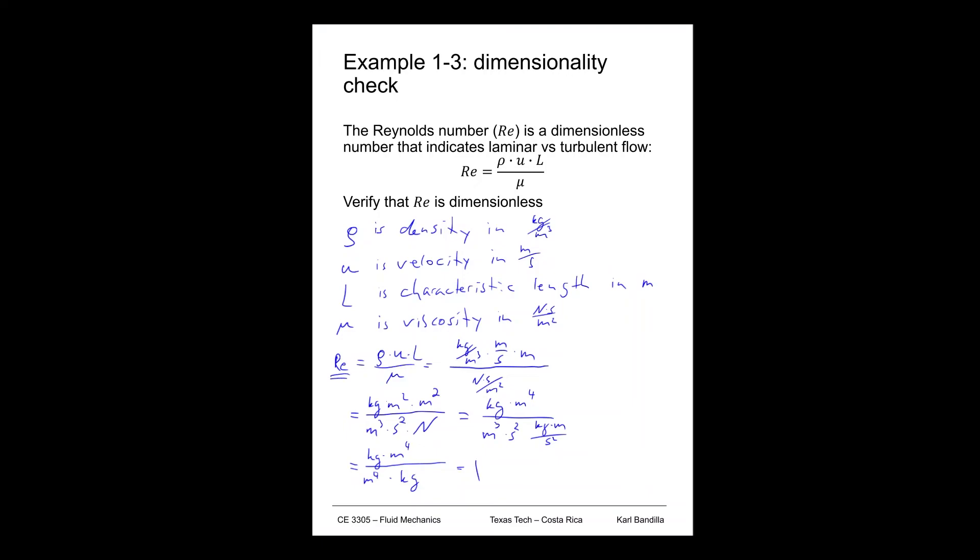So we can say from our dimensionality check that the Reynolds number is a unitless, a dimensionless number. So if we'd come out with a dimension here, then it would not be dimensionless. It would have whatever dimension we give there. What we could show, just by plugging in all the different units, that in the end it is dimensionless.